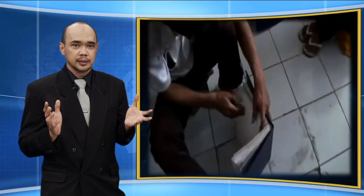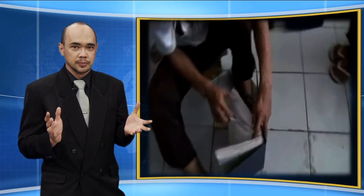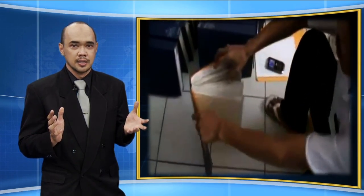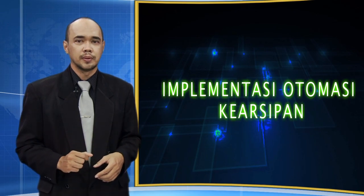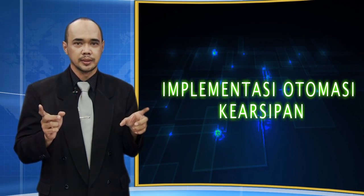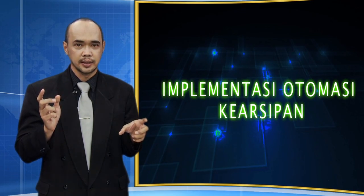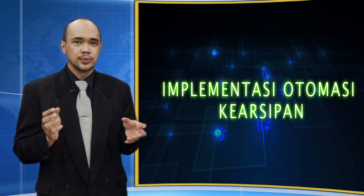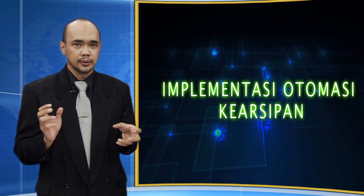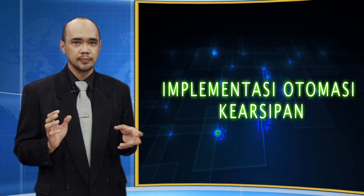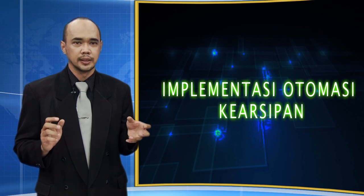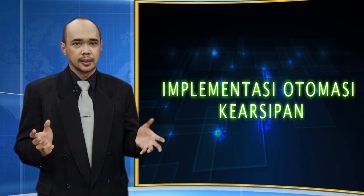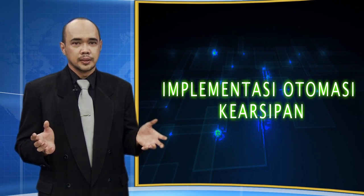Dokumen-dokumen yang termasuk kategori ARSIP tersebut harus dikelola secara baik sehingga tetap reliable, autentik, lengkap, dan dapat digunakan. Karena sistem informasi tersebut berbasis teknologi informasi dan komunikasi dalam pengoperasiannya, maka ARSIP yang dihasilkannya juga akan berformat digital atau elektronik, dan dengan sendirinya menuntut adanya sistem pengelolaan ARSIP yang berbasis teknologi dan informasi juga. Dengan kata lain, perlu dilaksanakan otomasi kearsipan.